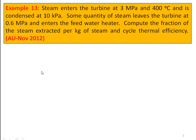We take an example from the question paper November 2012, Example number 13. Steam enters the turbine at 3 mega Pascal and 400 degree Celsius and is condensed at 10 kilo Pascal. Some quantity of steam leaves the turbine at 0.6 mega Pascal and enters the feed water heater. Compute the fraction of steam extracted per kg of steam and the cycle thermal efficiency.